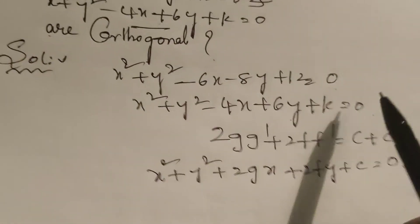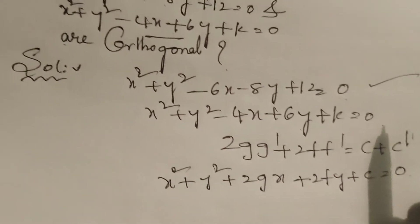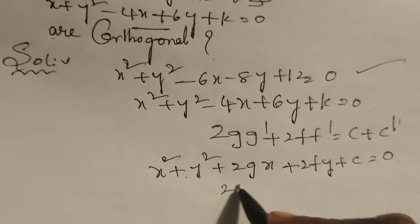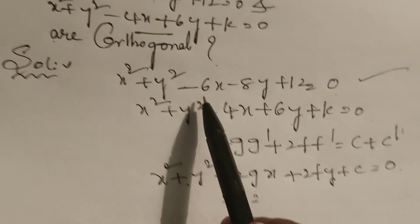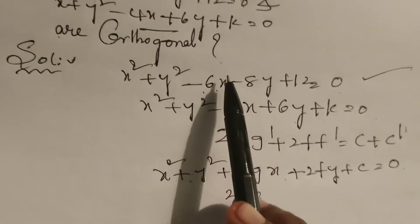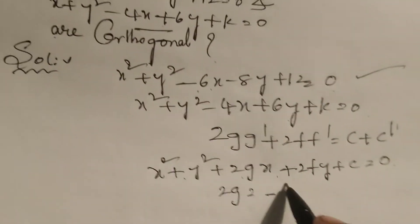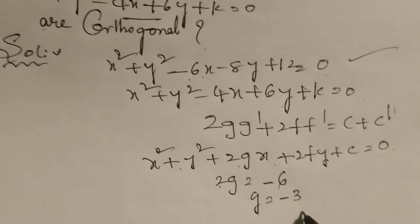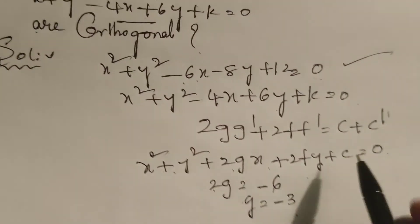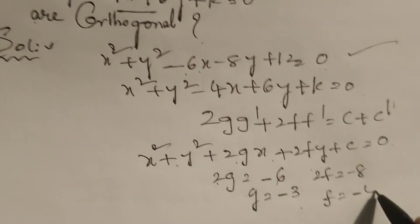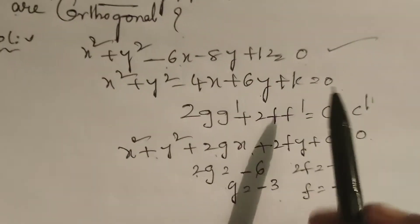For the first circle equation, comparing with the standard form: 2g = -6, so g = -3. And 2f = -8, so f = -4. And c = 12.